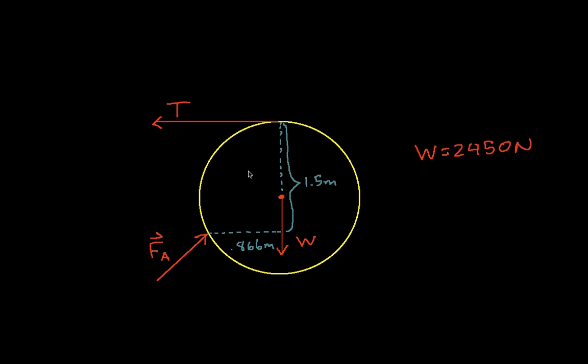So what I've done is redrawn our free body diagram to show T, W, and FA. T and W we know the direction for, W we know the magnitude of, so we need to solve for T, and we need to solve for the direction and magnitude of FA.